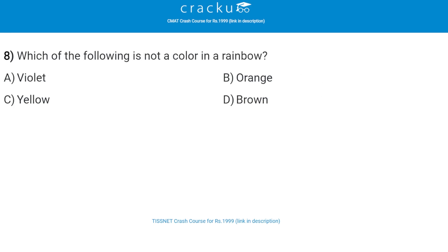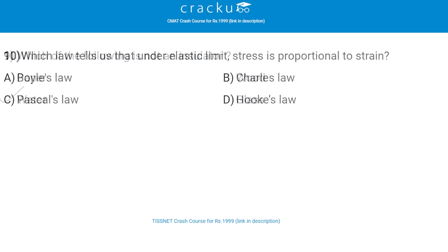Next: which of the following is not a color in a rainbow? The correct answer is brown, that is option D. Next: which of the following is not an insulator? The correct answer is water, that is option C.